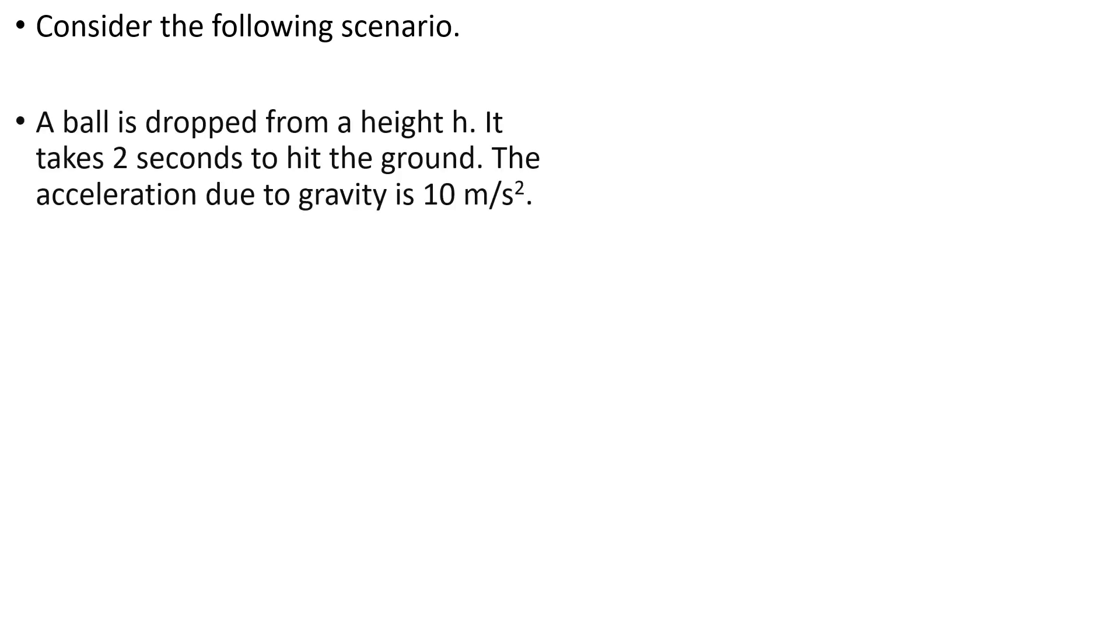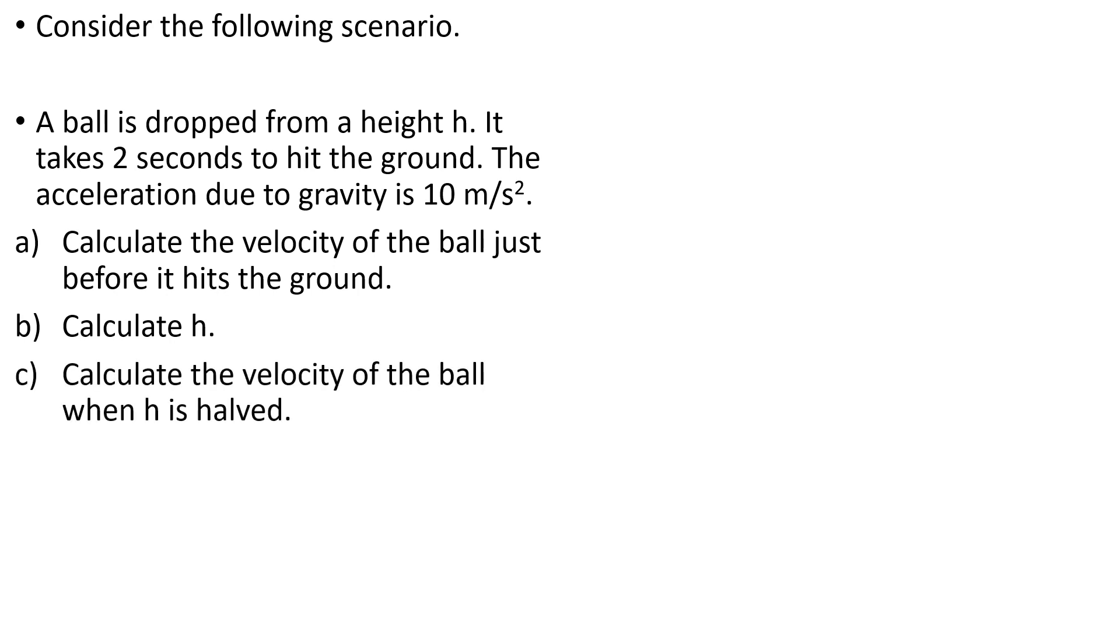Let us solve the problem below. A ball is dropped from a height h. It takes 2 seconds to hit the ground. The acceleration due to gravity is 10 meters per squared second. Part A: Calculate the velocity of the ball just before it hits the ground. Part B: Calculate h. Part C: Calculate the velocity of the ball when h is halved.